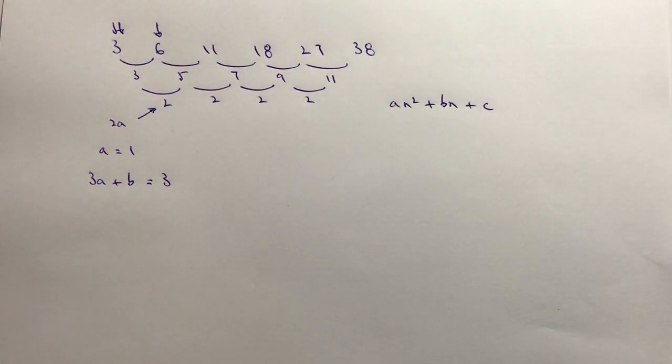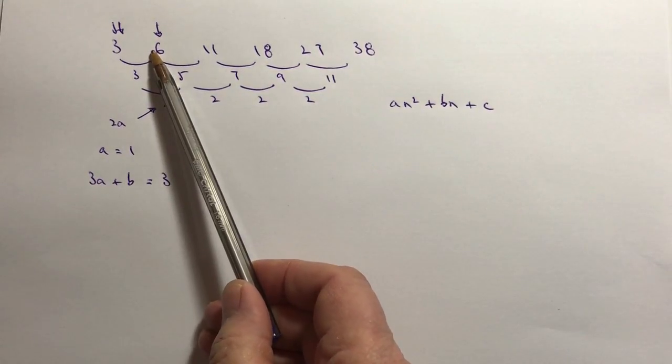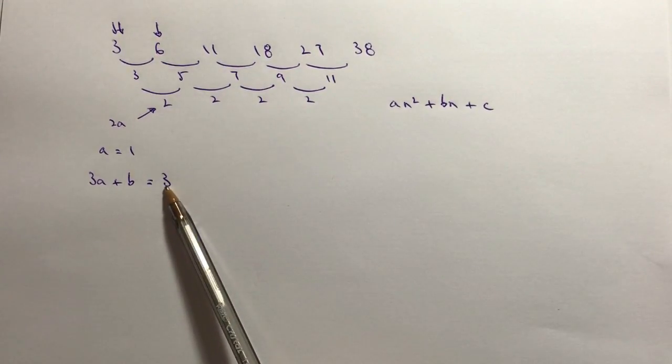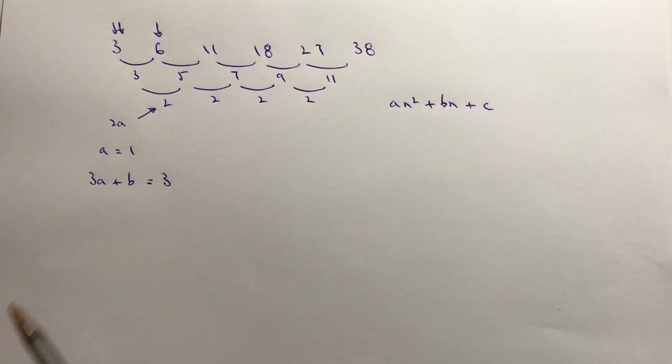Now this is a little formula that you need to remember when you're dealing with quadratic sequences. We're saying the first two numbers, the difference between the first two numbers is 3, and that equals the formula 3a plus b. There are reasons as to why that happens but if you remember it like this it does make life a little bit easier for you.